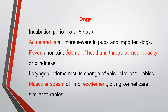In dogs, the symptoms are more severe in pups and imported dogs. Symptoms include fever, anorexia, edema of the head and throat, corneal opacities or blindness, and laryngeal edema resulting in a change of voice similar to rabies. There is also muscular twitching of the limbs, excitement, and biting of cage bars. The nervous form is difficult to differentiate from rabies, as the symptoms are almost the same.